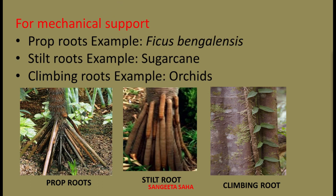Next coming to the stilt root. This stilt root develops from the lower nodes of the stem to give additional support. They are aerial, adventitious, and obliquely growing roots. They have several large overlapping root caps, commonly called multiple root caps. They are found in sugar cane and maize, and basically help in absorption of water and minerals from the soil.